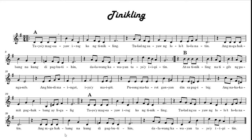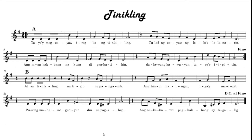Songs with repeated parts like this are usually written with repeat marks to shorten the score. So, from 47 measures, we shorten this score to 31 measures. In this new score, you can see these words or symbols. These are just some of the repeat marks that you need to know in music. Let us discuss them one by one.